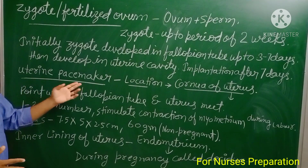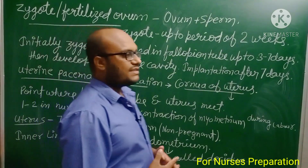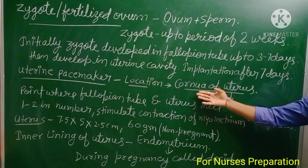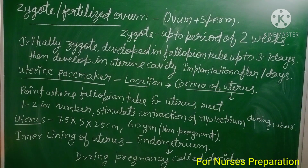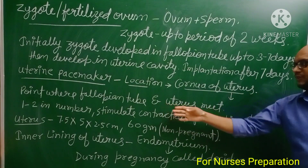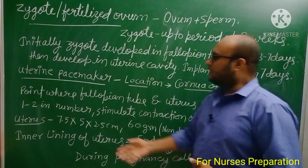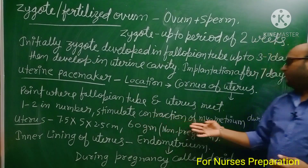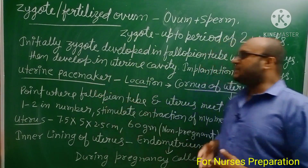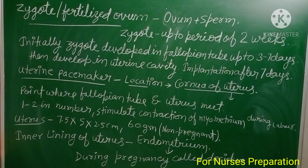Just as the SA node is known as the pacemaker of the heart, the uterus also has a pacemaker. One or two uterine pacemakers are found in the cornua of the uterus — the point where the fallopian tube and uterus meet. During labor, these uterine pacemakers stimulate contraction of the myometrium.